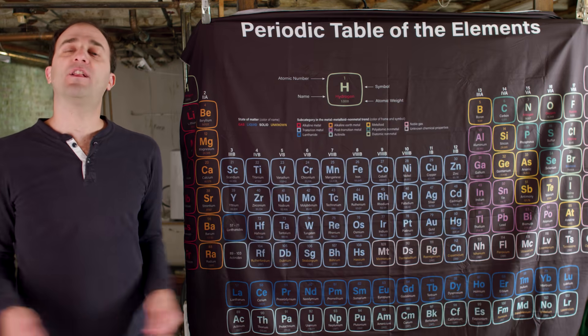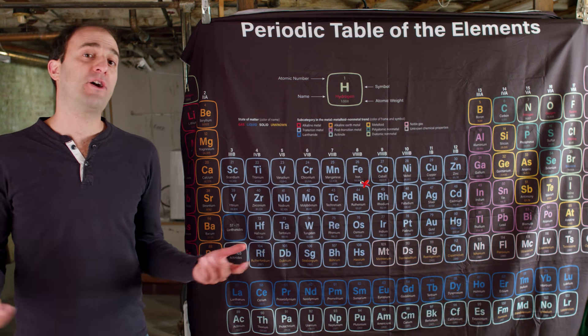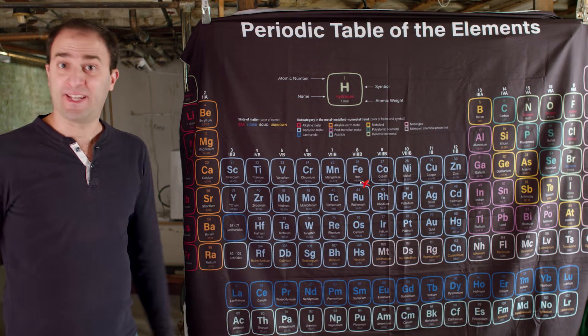And there are tens, maybe even hundreds of flow battery companies out there right now. Some of them are old names like Lockheed Martin. And others are very new startups that you probably have never heard of. Some use all vanadium systems. Some use iron. Some use other elements. Just like with solid batteries, you can pretty much throw darts at the periodic table and use whatever element it hits.